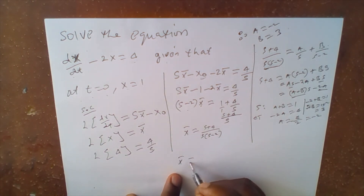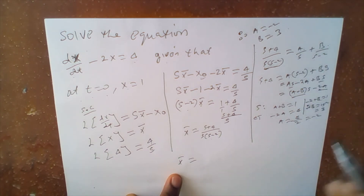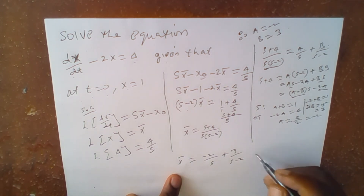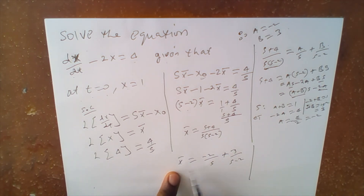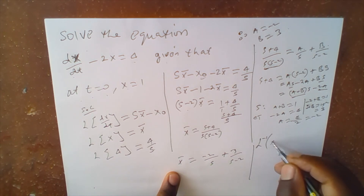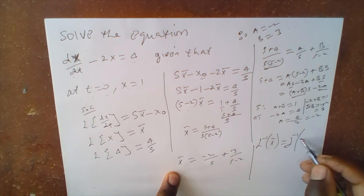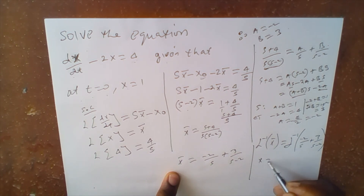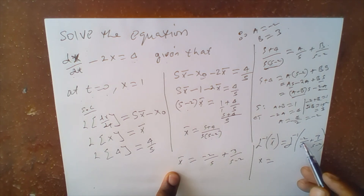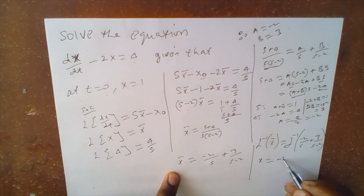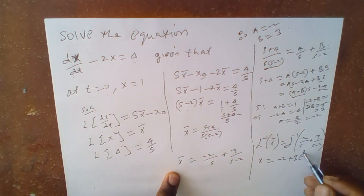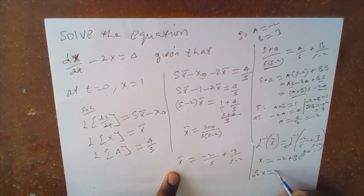Substituting back, x̄ equals negative 2 over s plus 3 over (s minus 2). Taking the inverse Laplace transform of both sides, the inverse of x̄ is x. The inverse of negative 2 over s is negative 2, and the inverse of 3 over (s minus 2) is 3e^(2t). Therefore, x equals 3e^(2t) minus 2.